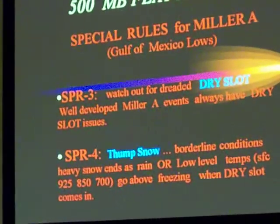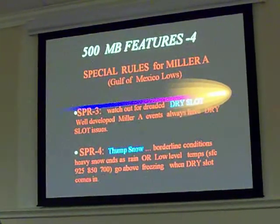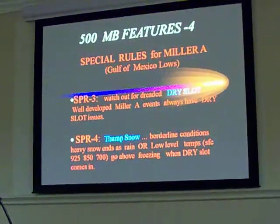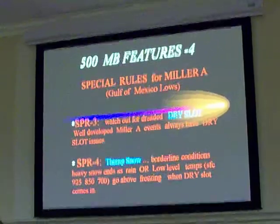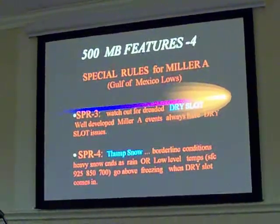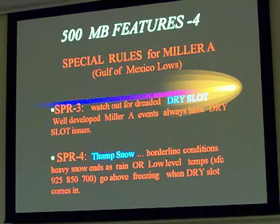Special rule number four: thump snow. We had several events of these this past winter. Where you have borderline conditions and you look out at 60, 72, or 84 hours, you see the precipitation is over and the 850 temperature is plus three. The problem is that one of the reasons it jumped up that way was because the dry slot came through and the precipitation ended. But if you look during the event, you have those heavy vertical velocities, your 850 temperature is like minus one, minus two, your low-level temperatures are cold enough — it's full of snow. People look after the event, see the 850 temperature warming up and think it's going to be rain. Not necessarily. Watch out for thump snow — big, heavy snow comes in on walls.